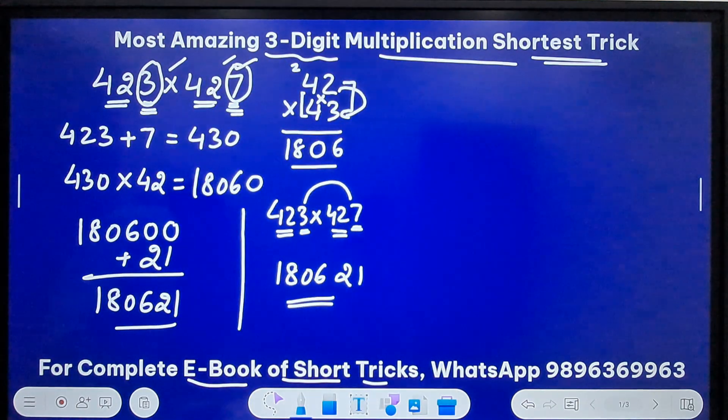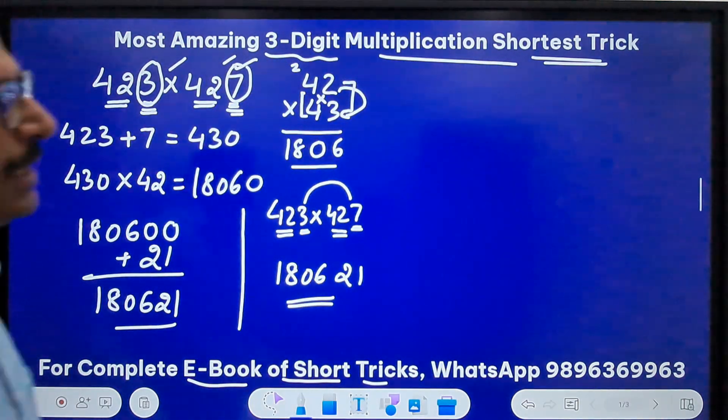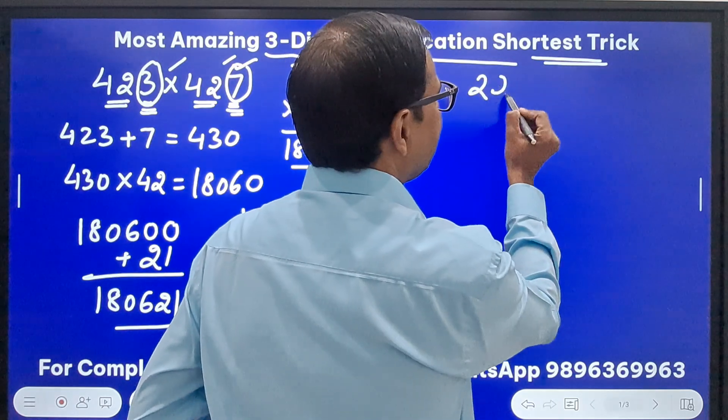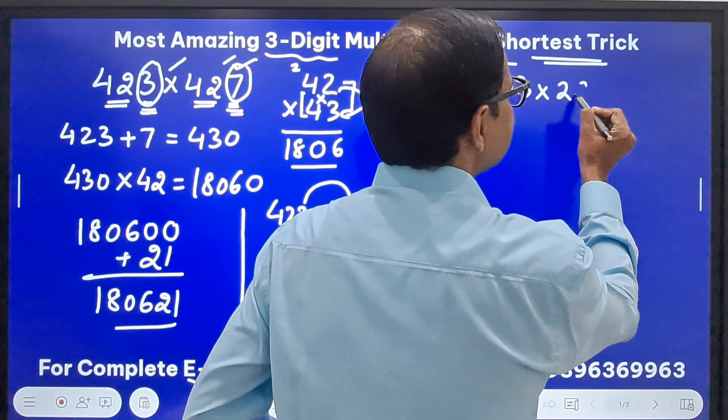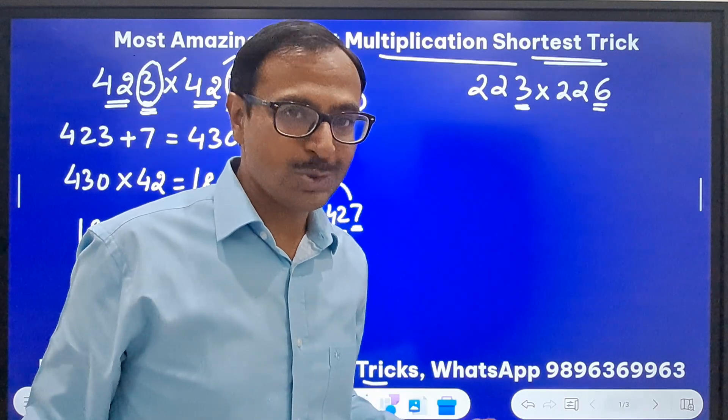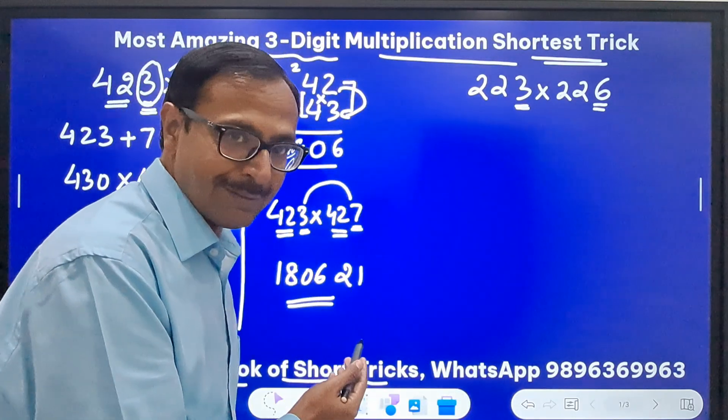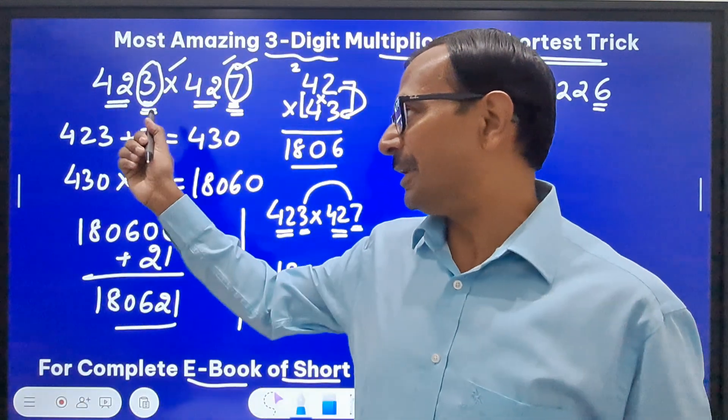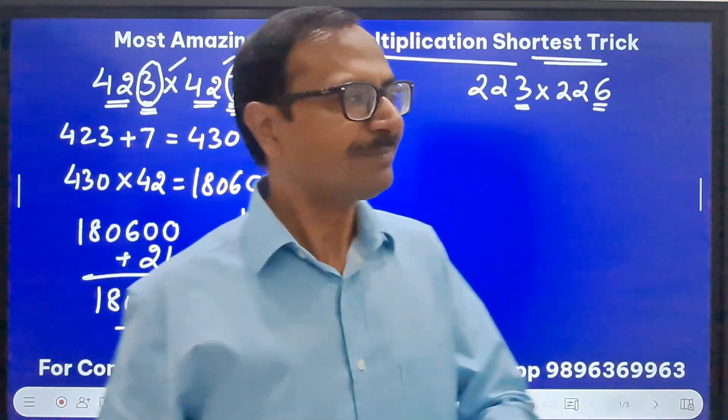Let's take the example where we have to do 223 and 226. 223 and 226. Now you can see 3 and 6, they are not adding up to 10. So this method doesn't work. We will have to follow the method which I told you here.